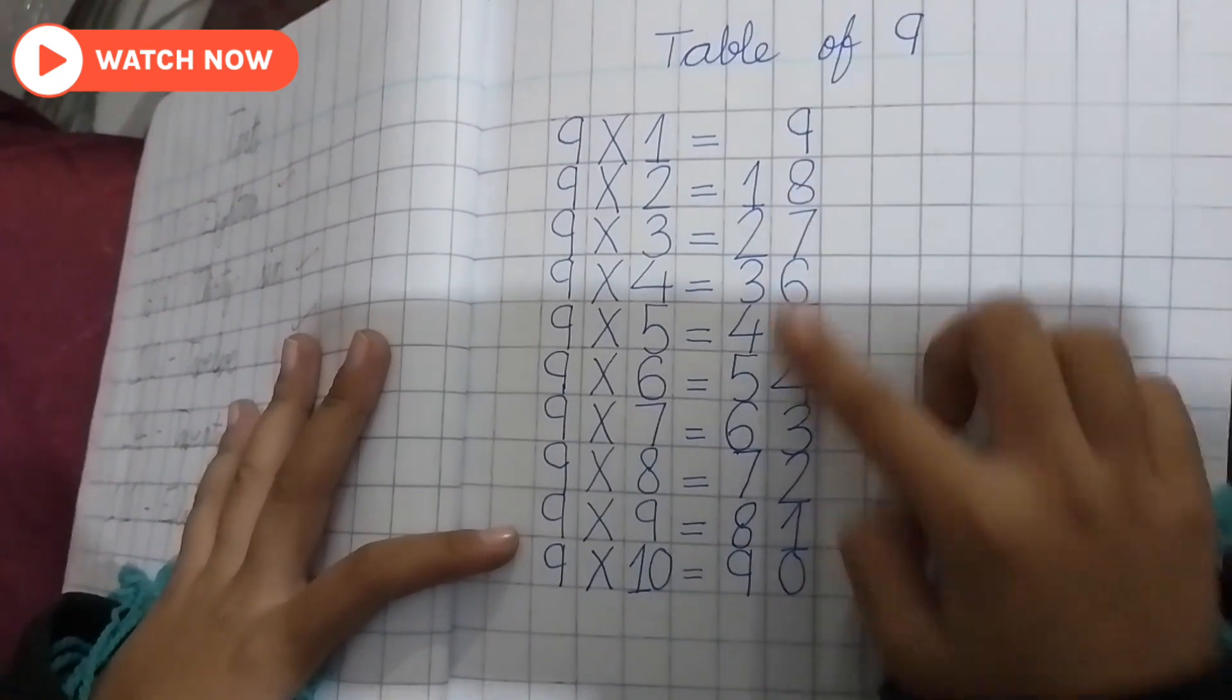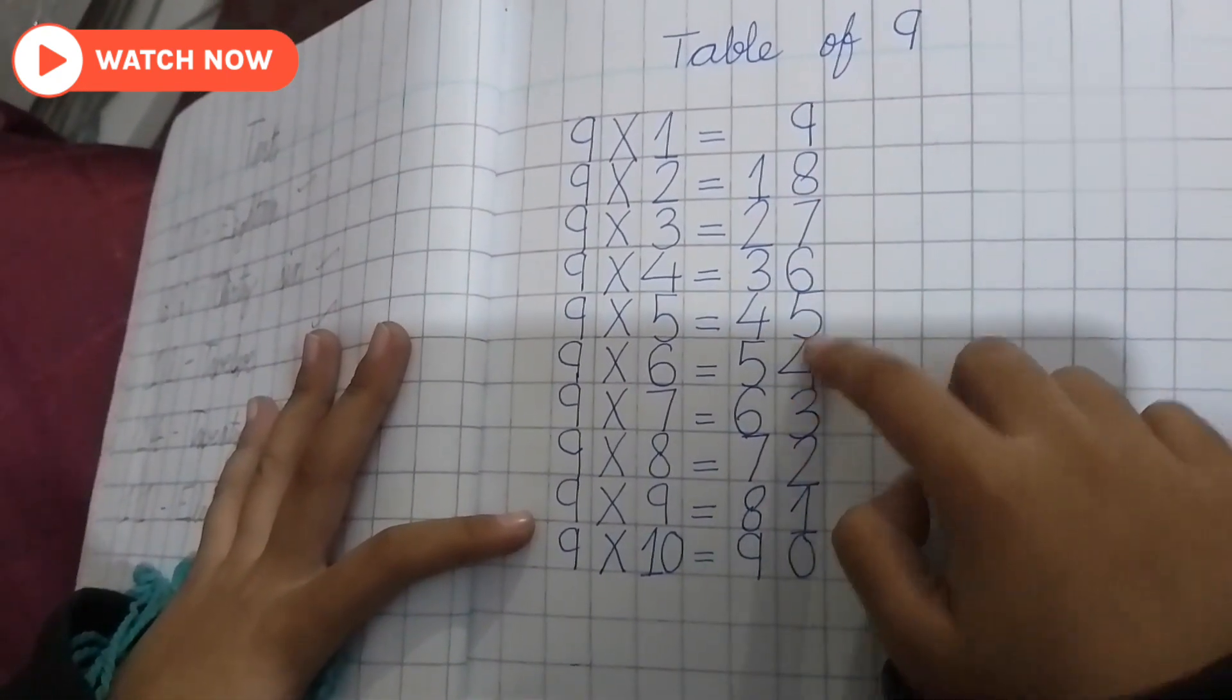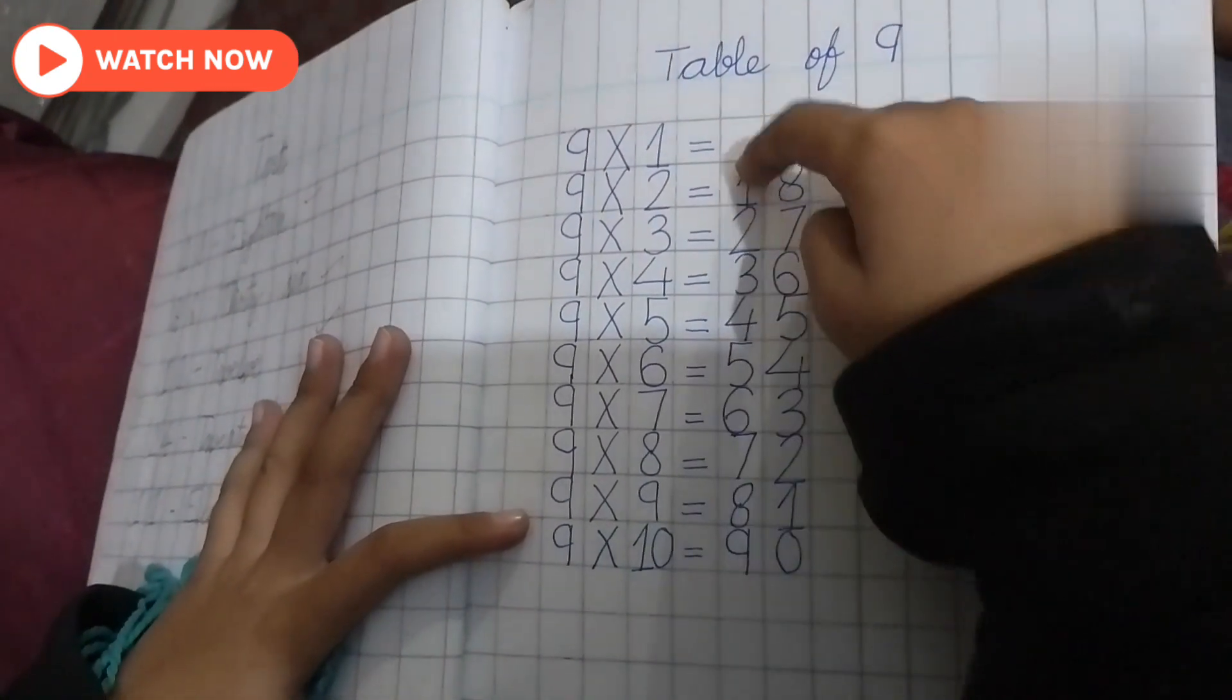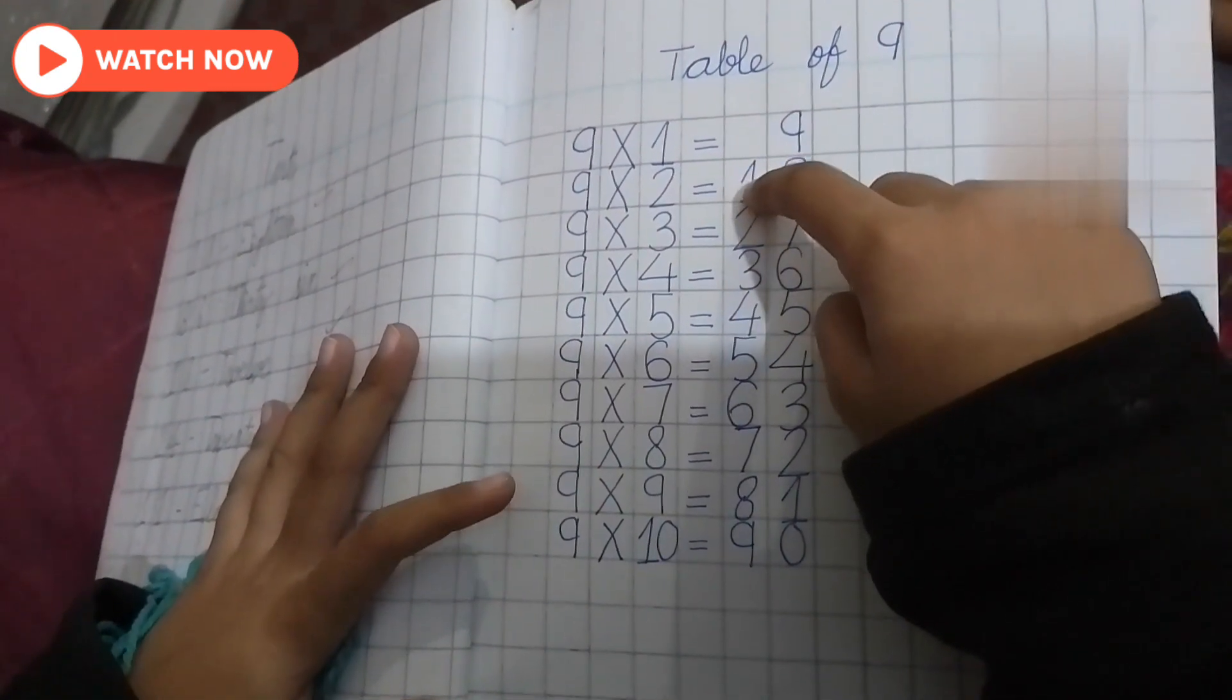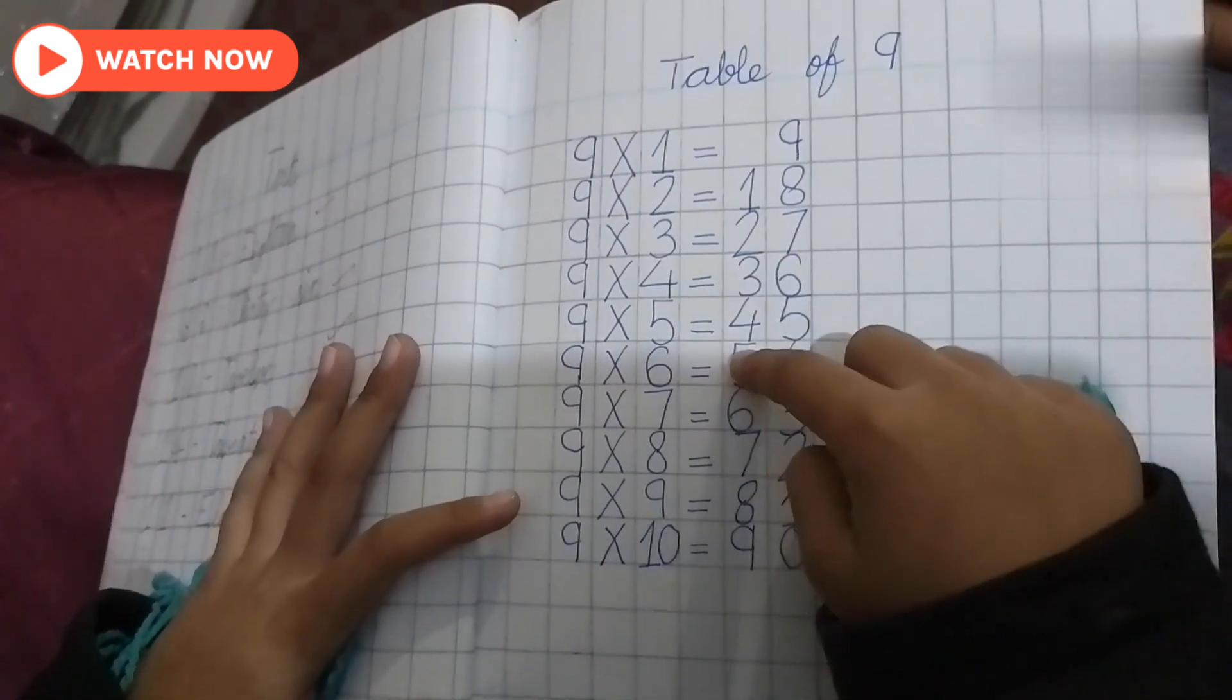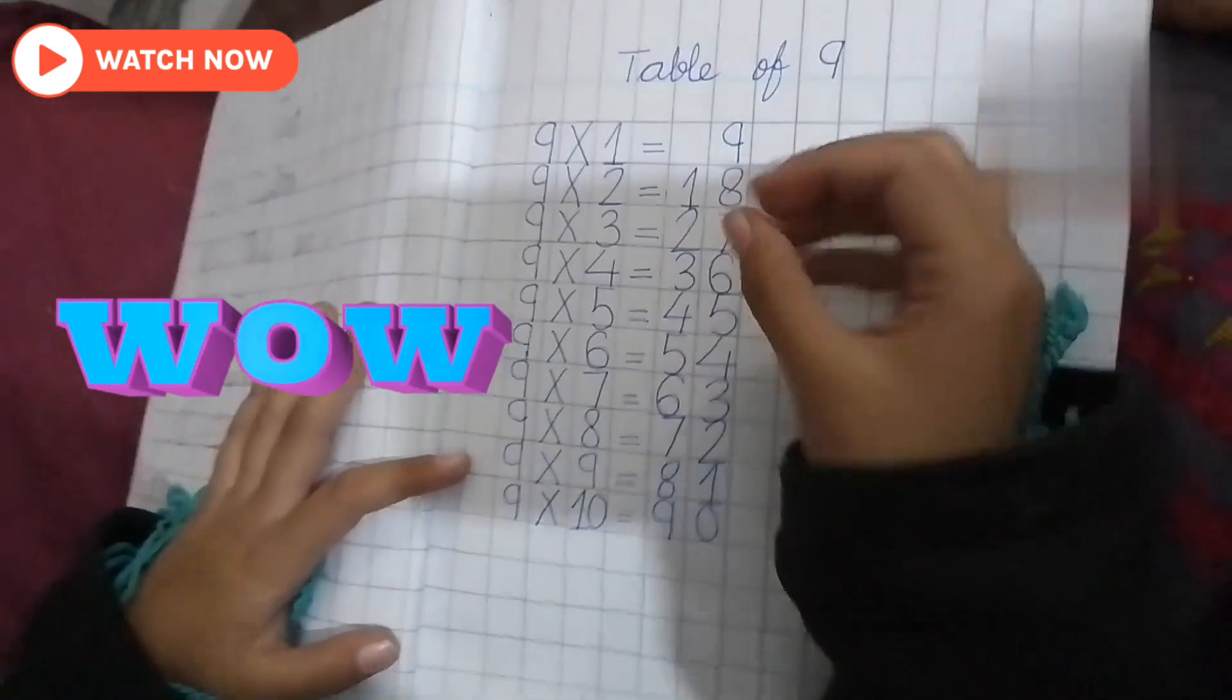I'm going to write the table of 9. The digits go 8, 7, 6, 5, 4, 3, 2, 1, 0. And then 2, 3, 4, 5, 6, 7, 8, 9. Look at it. It is easy.